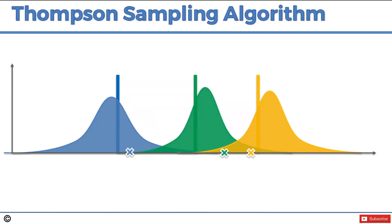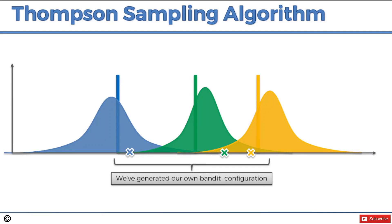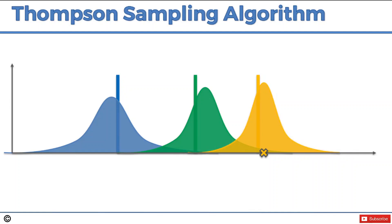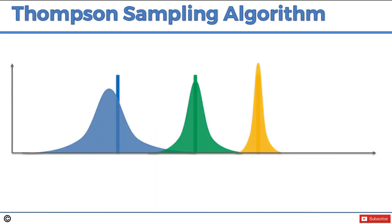Let's do this one more time to practice the logic. A new round generates a bandit configuration — the expected actual returns we think we'll get. The best one is obvious, so we pull the yellow machine's lever. That triggers the yellow machine's distribution and spits out a real-world value. We adjust our perception of reality to incorporate the new information, and so on. We keep doing this until the distributions are substantially refined. Over time, we'll generate more and more rounds based on the yellow machine, so the other distributions may not get as refined — which is fine, because our goal is to find and exploit the best machine.